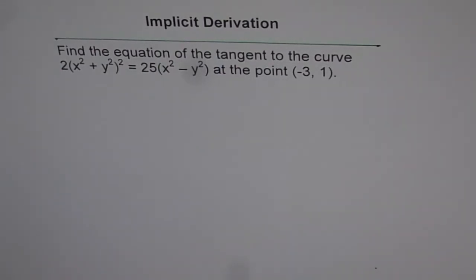Find the equation of the tangent to the curve 2(x² + y²)² = 25(x² - y²) at the point (-3, 1).